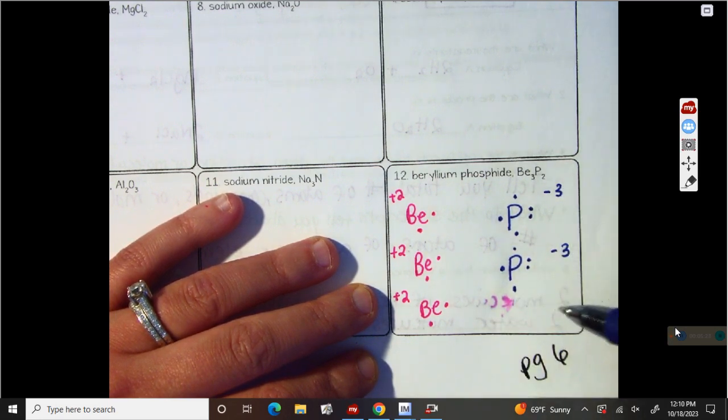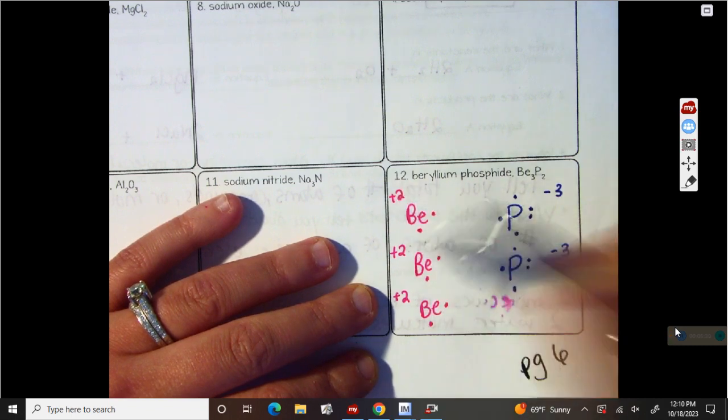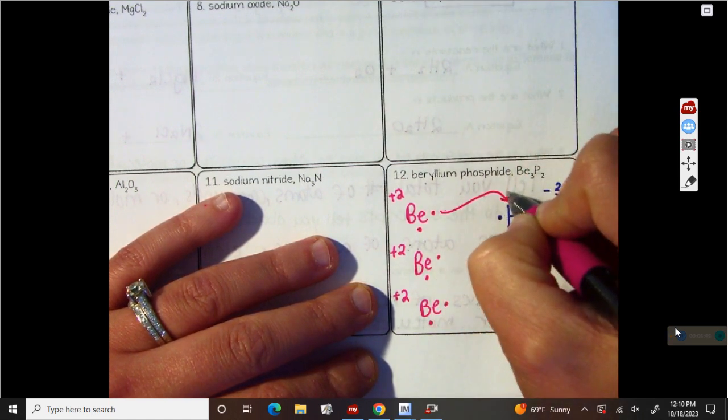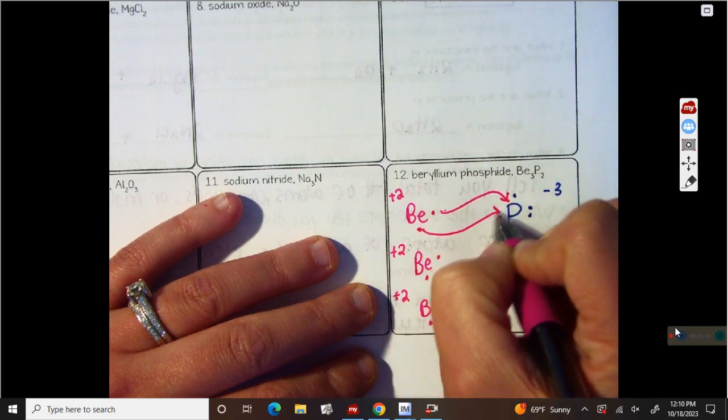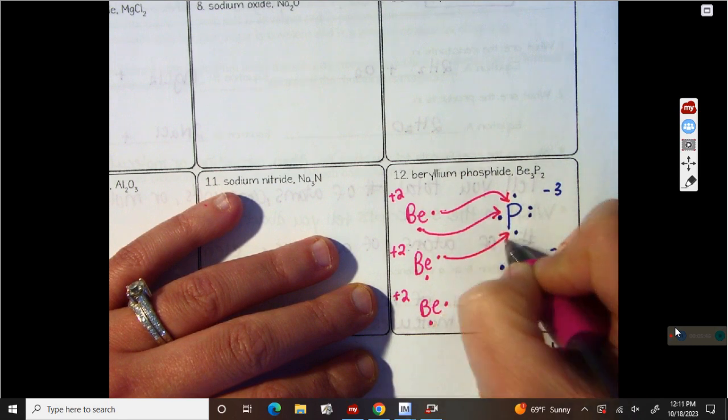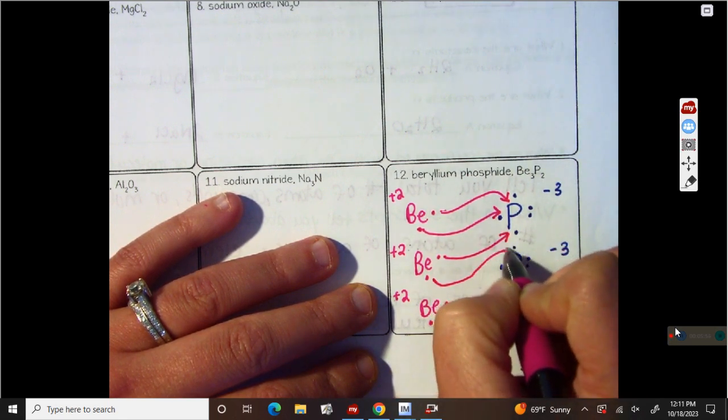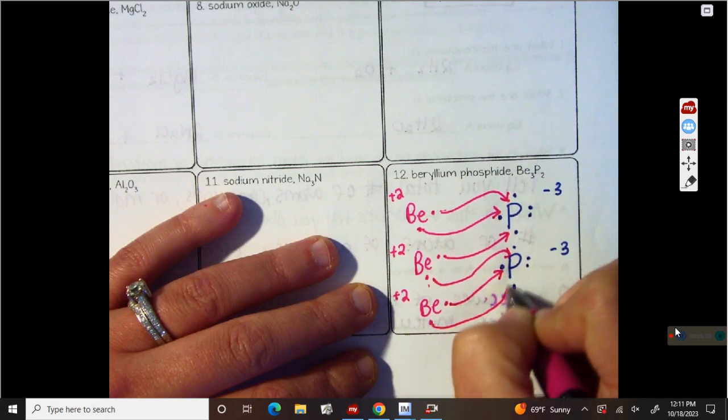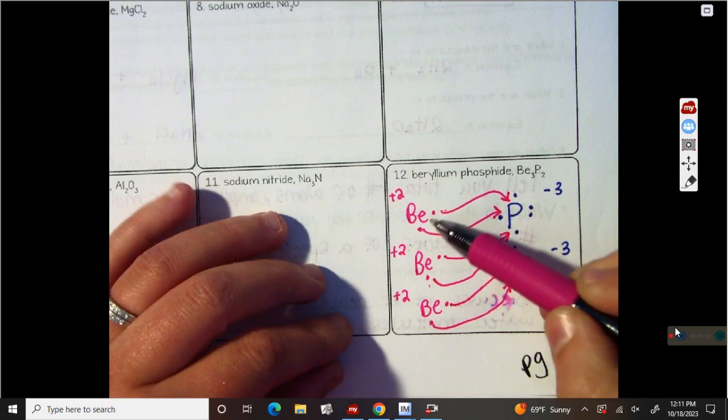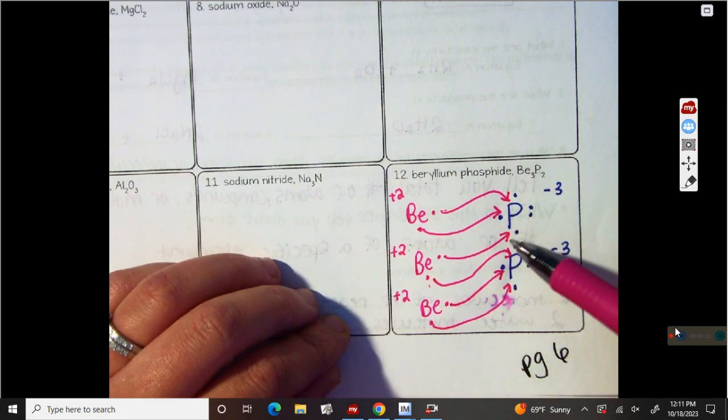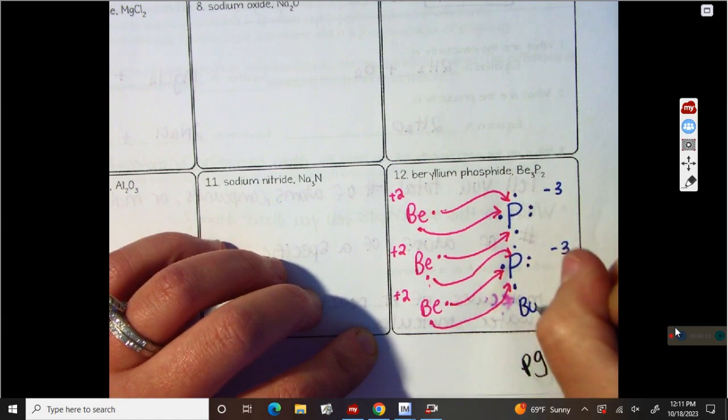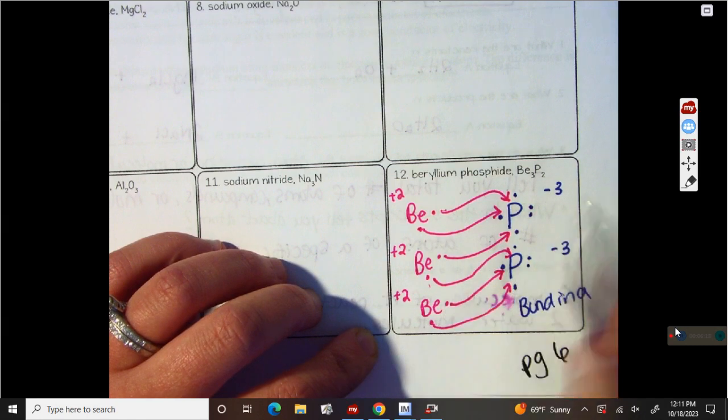So phosphorus, each phosphorus wants three electrons to fill up its outside shell. Each beryllium wants to lose two. So I'm going to put one of them. Notice there needs to be two on each side. Put one right here. The next one right here. And I need one on the bottom right here. Then I'm going to put this one up here on top. This one on the side. And this one on the bottom. So what I want you to see is it took, since beryllium only has two electrons to give and phosphorus needs three, we needed three total berylliums to fill up those extra spaces. So they bonded in a three to two ratio.